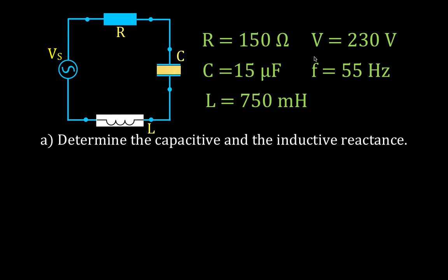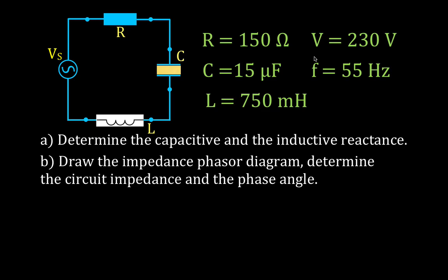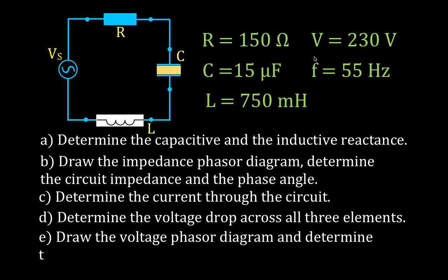In 10 minutes or less we're going to determine the capacitive and inductive reactance, draw the impedance phasor diagram, determine the circuit impedance and phase angle, determine the current through the circuit, determine the voltage drop across all the elements, and draw the voltage phasor diagram. You may notice we calculate the phase angle in two places — that's intentional redundancy to confirm our answers.